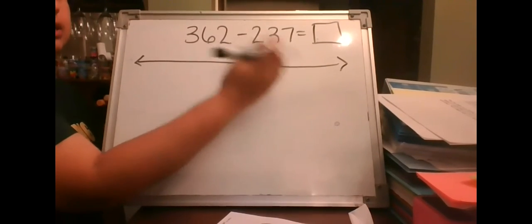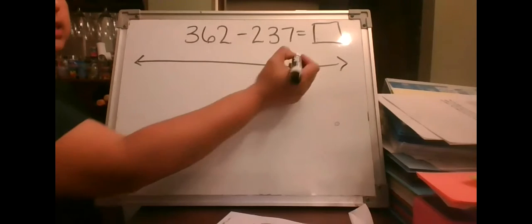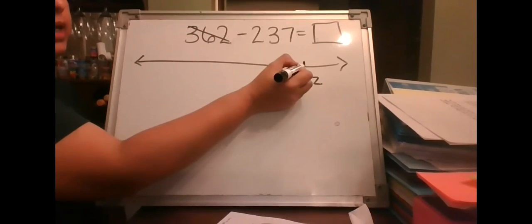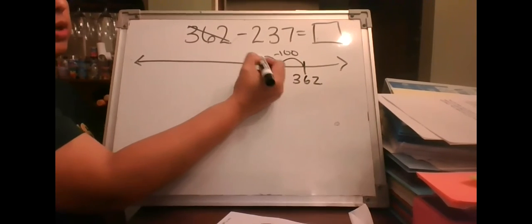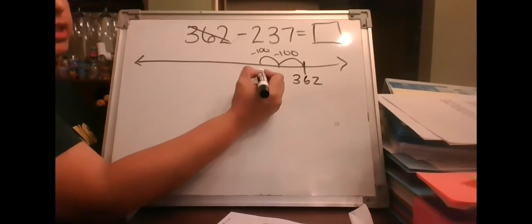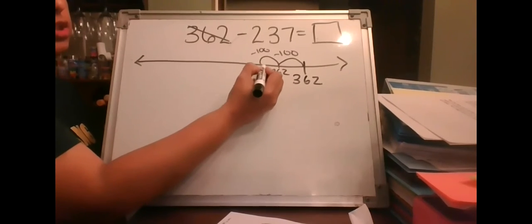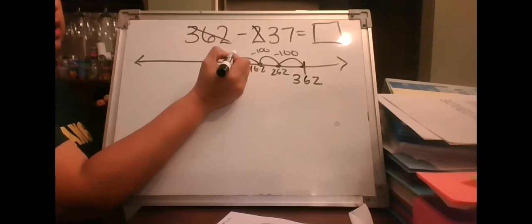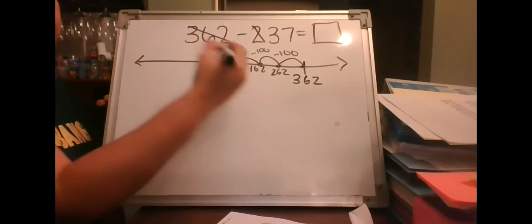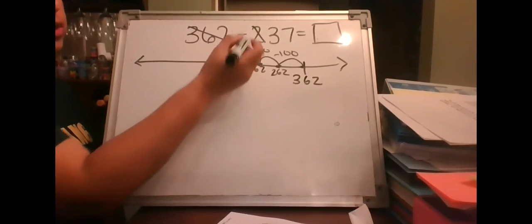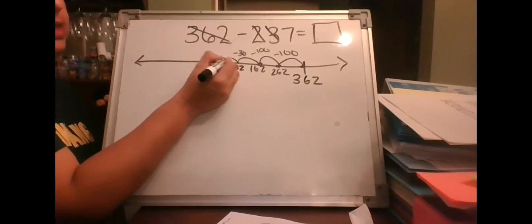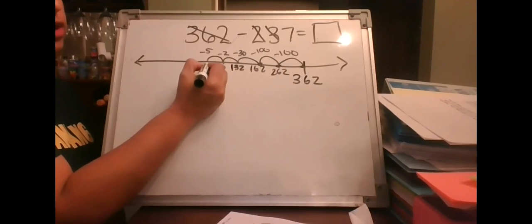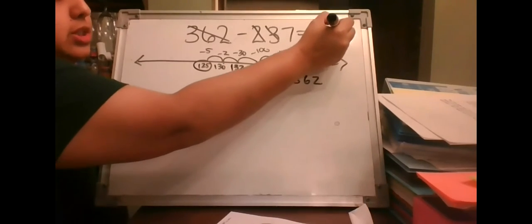Using the number line for subtraction, we start with the bigger number. Since we're subtracting, we move left because numbers get smaller. Start with 362, go back 200: minus 100 is 262, minus another 100 is 162. Go back 30: minus 10 is 152, minus 10 is 142, minus 10 is 132. Go back 7: minus 2 is 130, minus 5 is 125. Answer is 125.